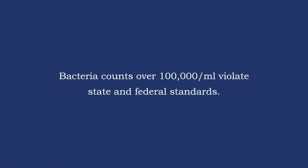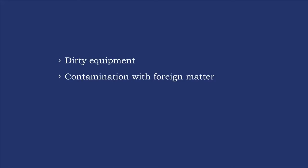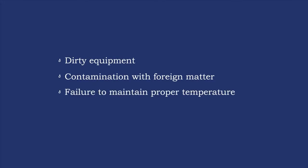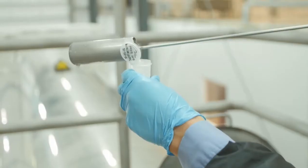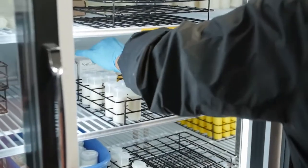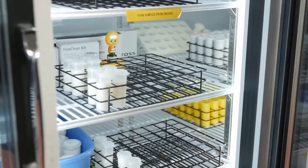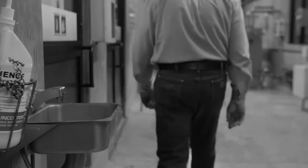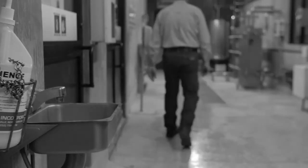Bacteria counts over 100,000 per milliliter violate state and federal standards, and can be caused by any one of the following: dirty equipment, contamination with foreign matter, failure to maintain proper temperature, or improper sampling procedures. This is why it's so important that you follow proper procedures when sampling and transferring milk. For instance, if you fail to wash your hands, you will contaminate the sample, creating the false impression that unsanitary conditions exist on the farm where you took samples.